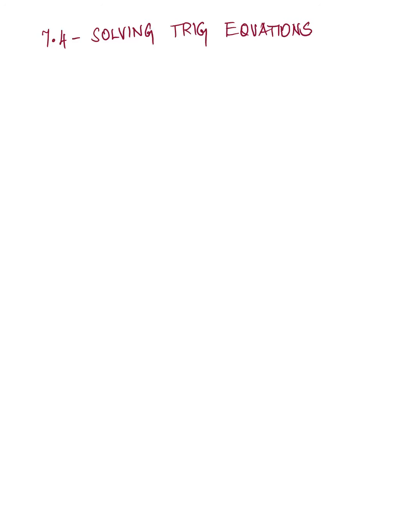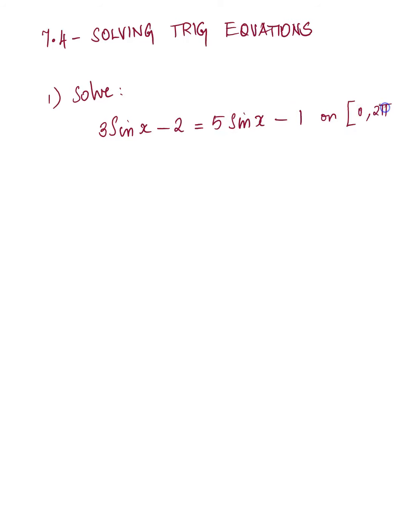Welcome everyone. Section 7.4: Solving Trig Equations. As the name says, we're going to solve equations that contain trigonometric functions. When we say solve, we need to find x or theta, whatever the missing variable is. The interval from 0 to 2π means the angle x must lie within one full rotation, and that is why they give you the interval. You will really rely on your algebra skills here.